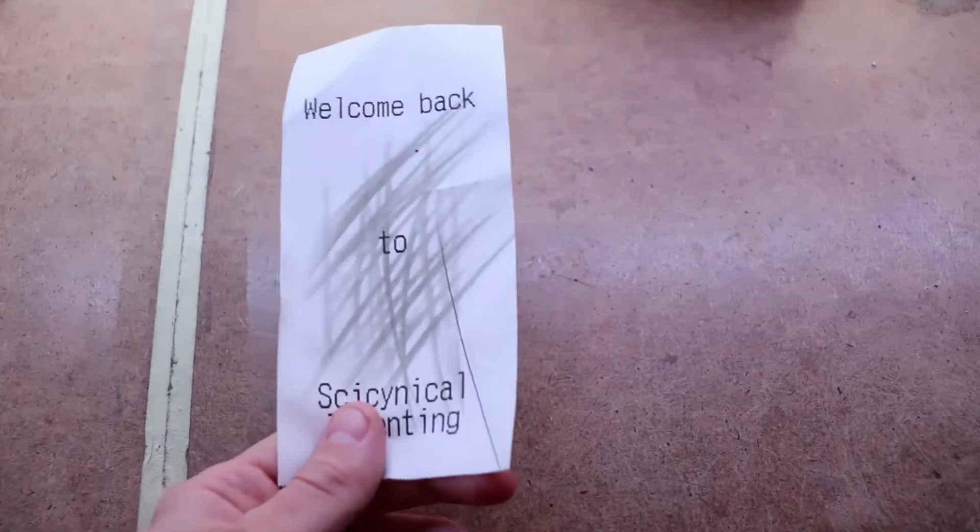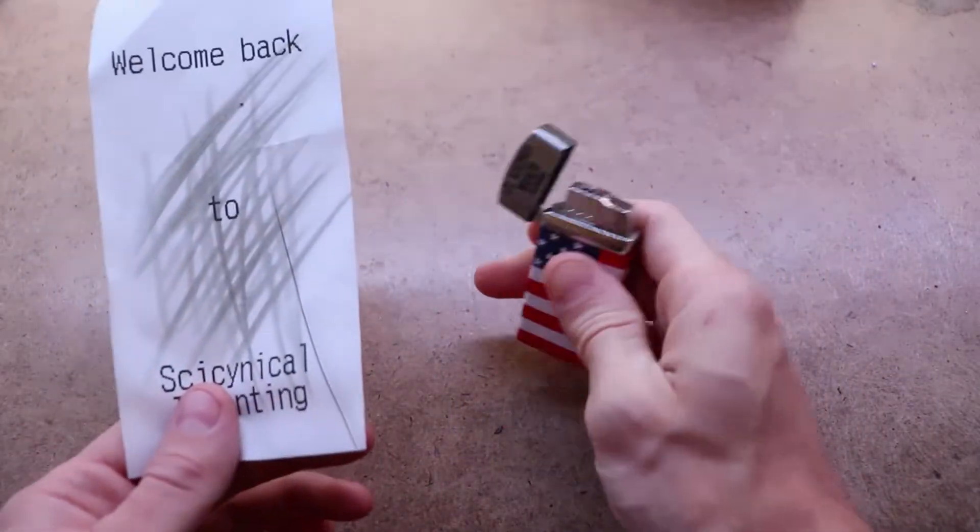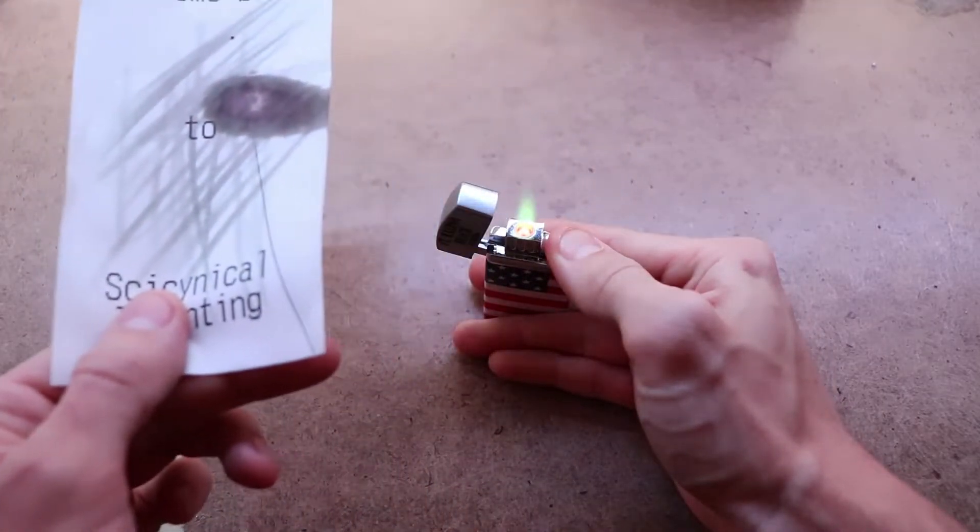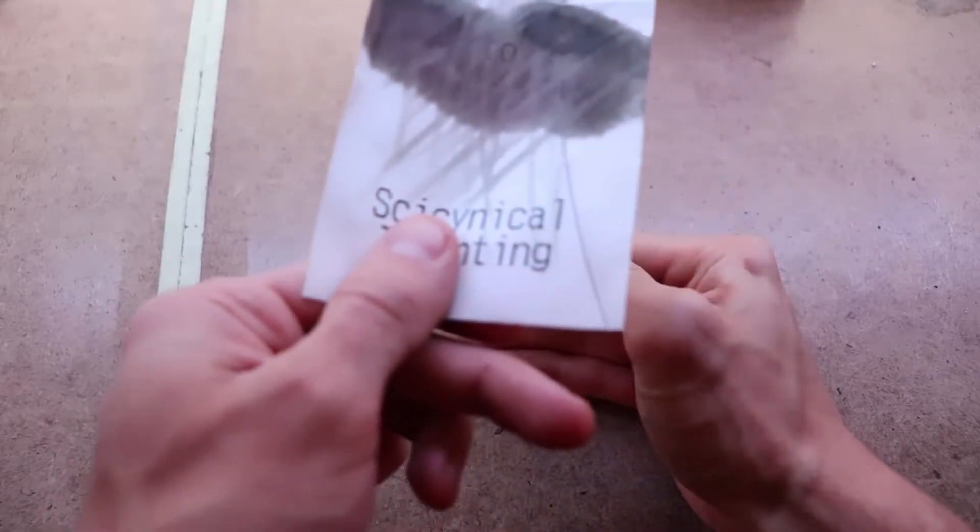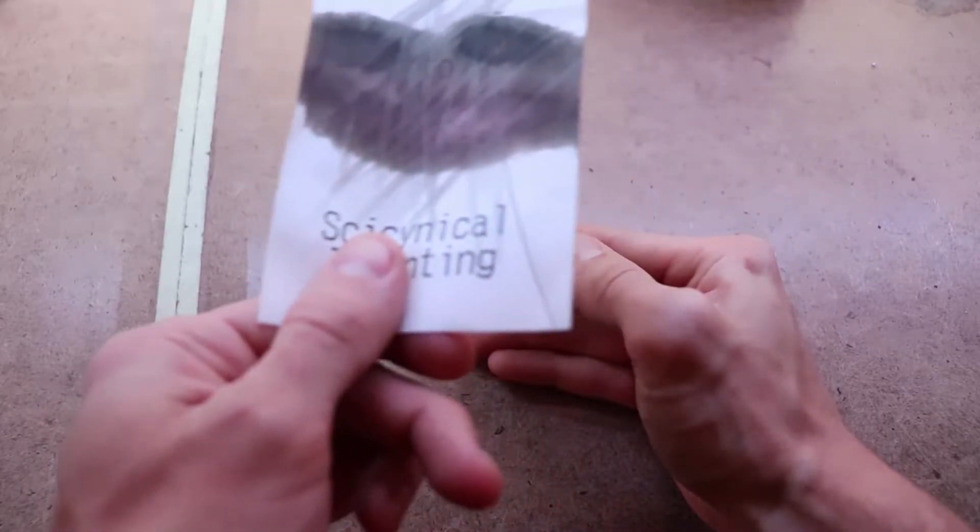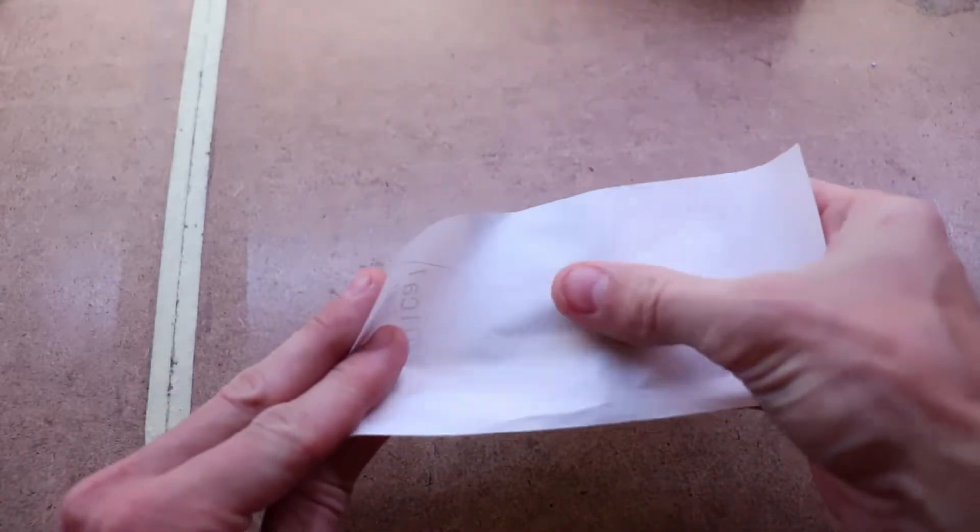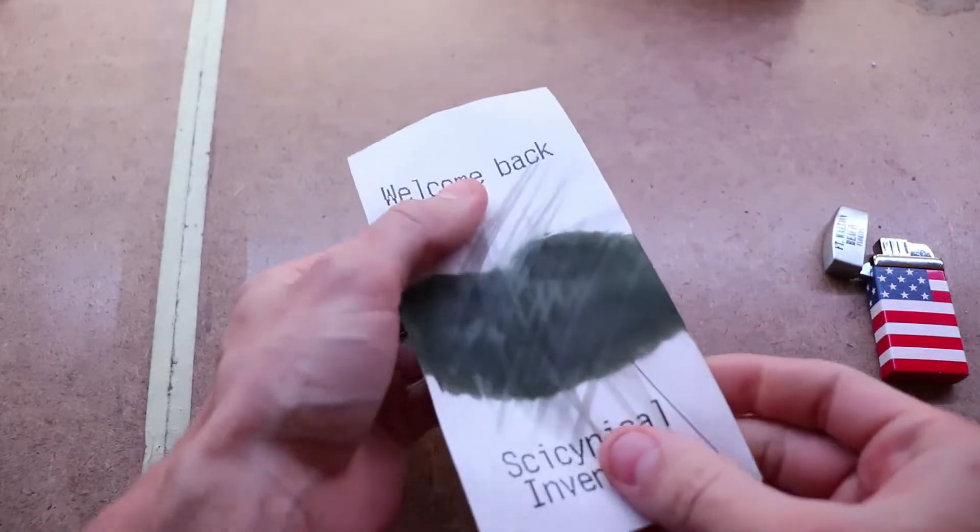Another way to show just how sensitive this paper is to heat is, of course, to use a lighter. So here we go. Again, nothing on the back, but it's very black on the front.